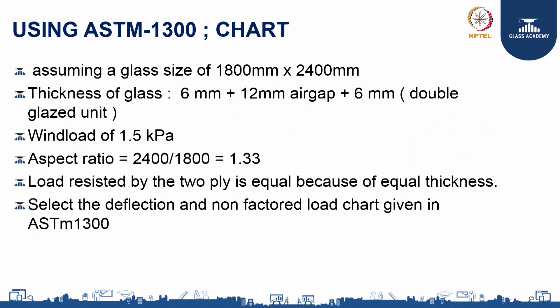The first method uses charts, and the second method I will explain is how to determine the glass thickness or stability using the American standard ASTM 1300, using the charts given in the code. Assuming the glass size as 1.8 by 2.4 meters, thickness of the glass as 6-12-6, and a wind load of 1.5 kPa.